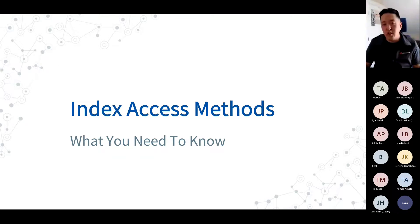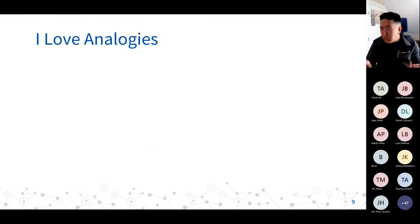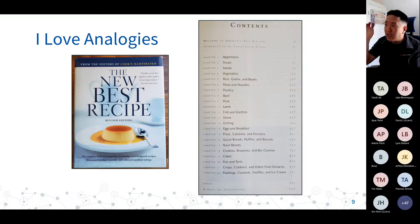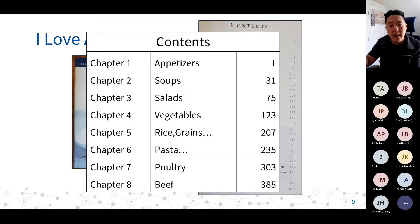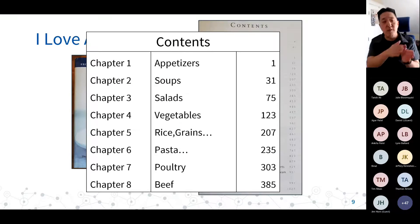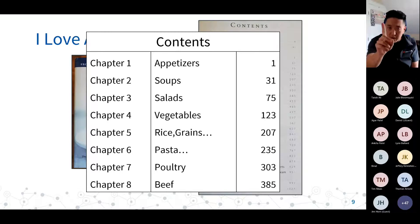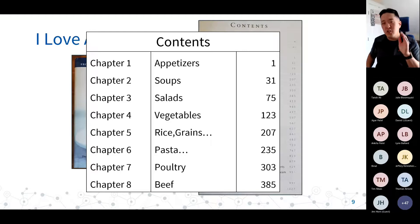Index access methods — what do you need to know? For today's presentation we're using a cookbook analogy. This particular cookbook has a table of contents in the beginning. The table of contents outlines the physical order of all the different recipes, split into categories: appetizers first, soups, salads, and so on. This book can only have one table of contents because there's only one way to physically order it — unless you start making copies. This is analogous to a clustered index.